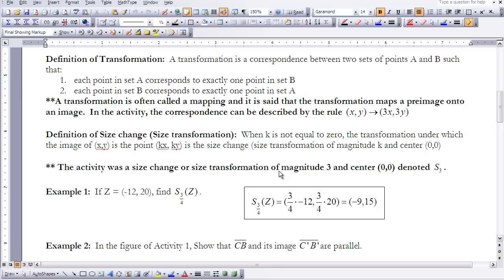A transformation is often called a mapping, and it's said that the transformation maps a pre-image onto an image. In the activity, the correspondence can be described by the rule X, Y, so that's our point XY, and then the arrow, and that's, you would say, maps onto 3X, 3Y. So what we've done in that whole activity is called a size transformation. So what is a size transformation when we define it? When K is not equal to 0, the transformation under which the image of XY is the point KX, KY is a size change, or a size transformation of magnitude K and center 0, 0. So I have a double star here. This activity was a size change, or a size transformation, of magnitude 3 and center 0, 0. Remember where all those lines came together? They came together at 0, 0. And the notation for that is S sub 3.